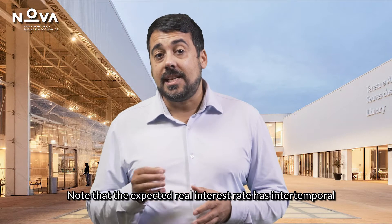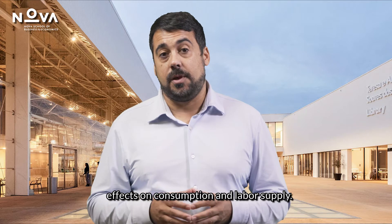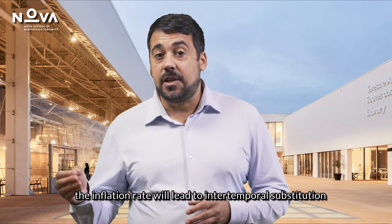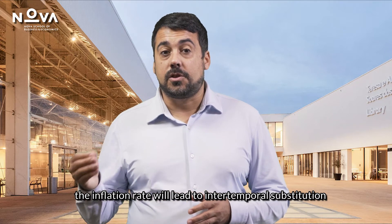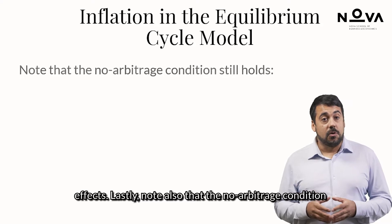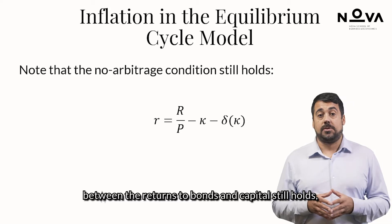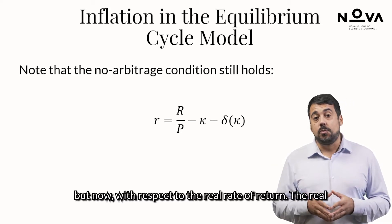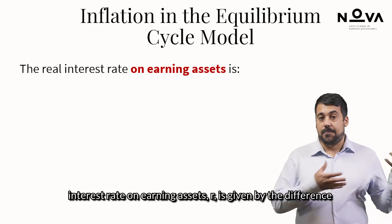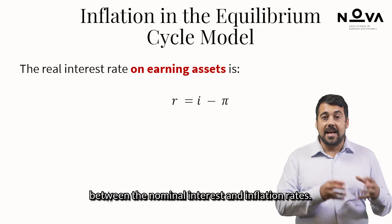Note that the expected real interest rate has intertemporal effects on consumption and labour supply. Therefore, for a given nominal interest rate, a change in the inflation rate will lead to intertemporal substitution effects. Note also that the no arbitrage condition between the returns to bonds and capital still holds, but now with respect to the real rate of return. The real interest rate on earning assets, R, is given by the difference between the nominal interest and inflation rates.